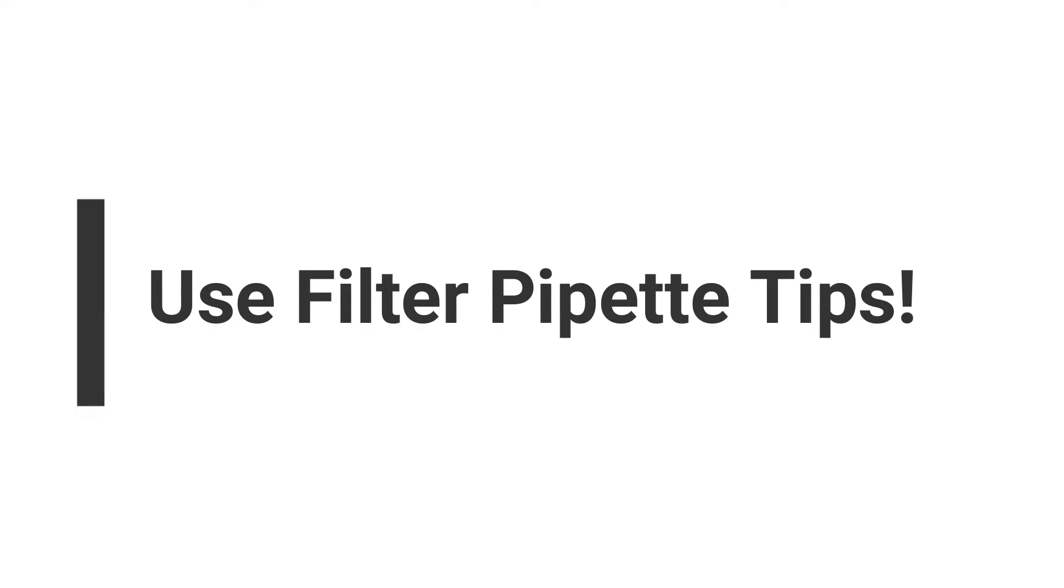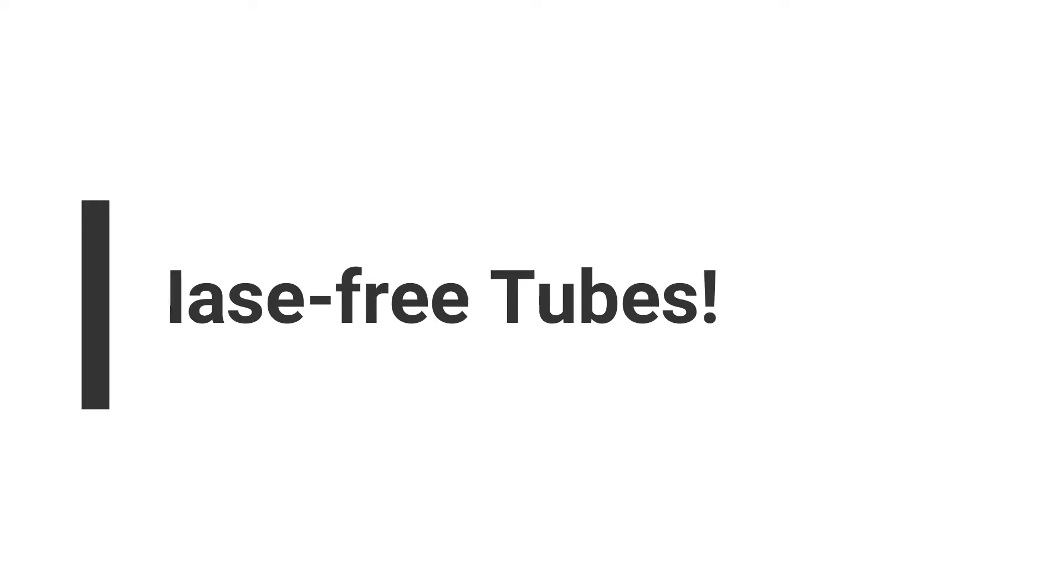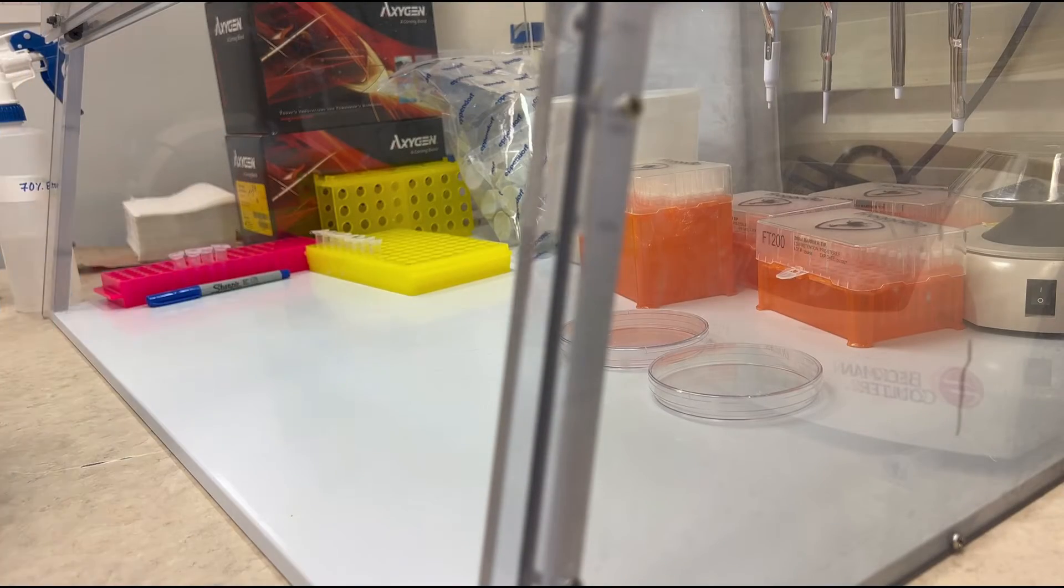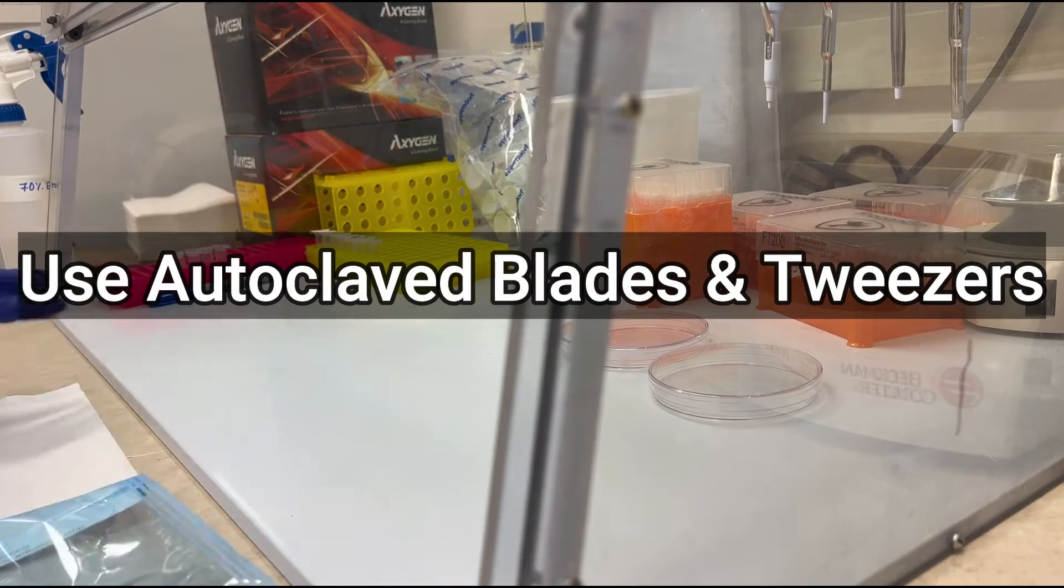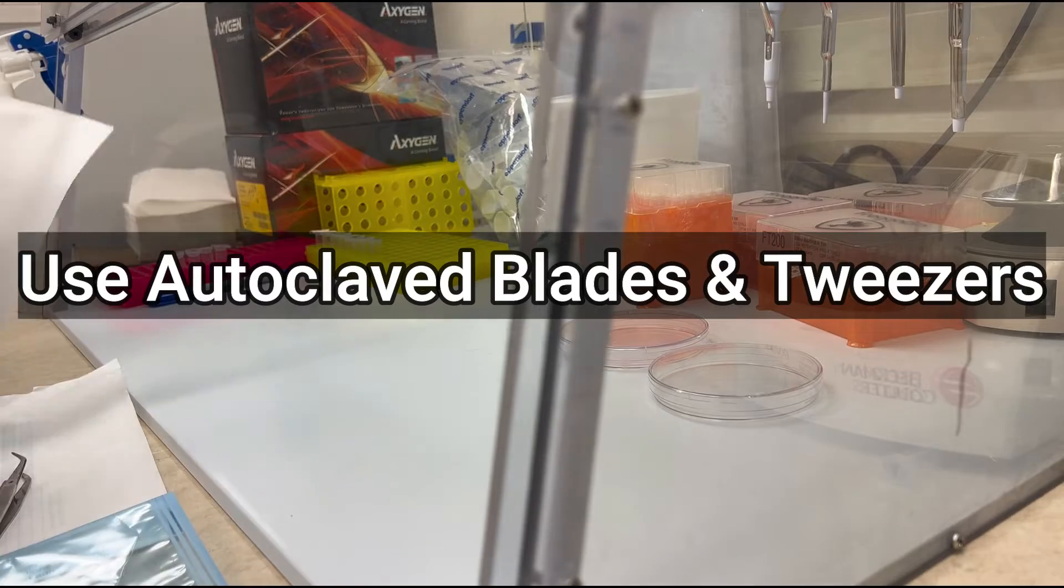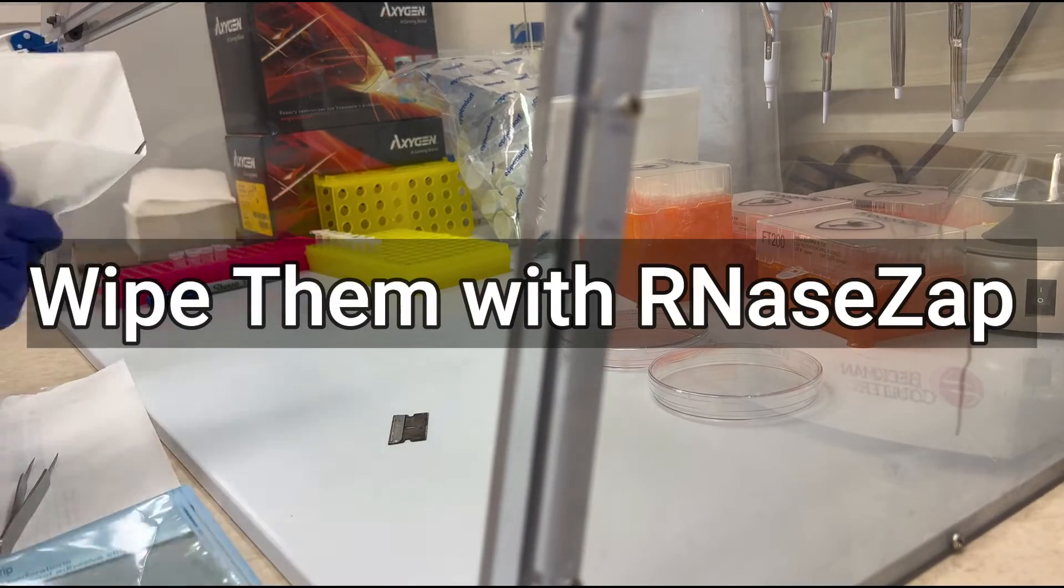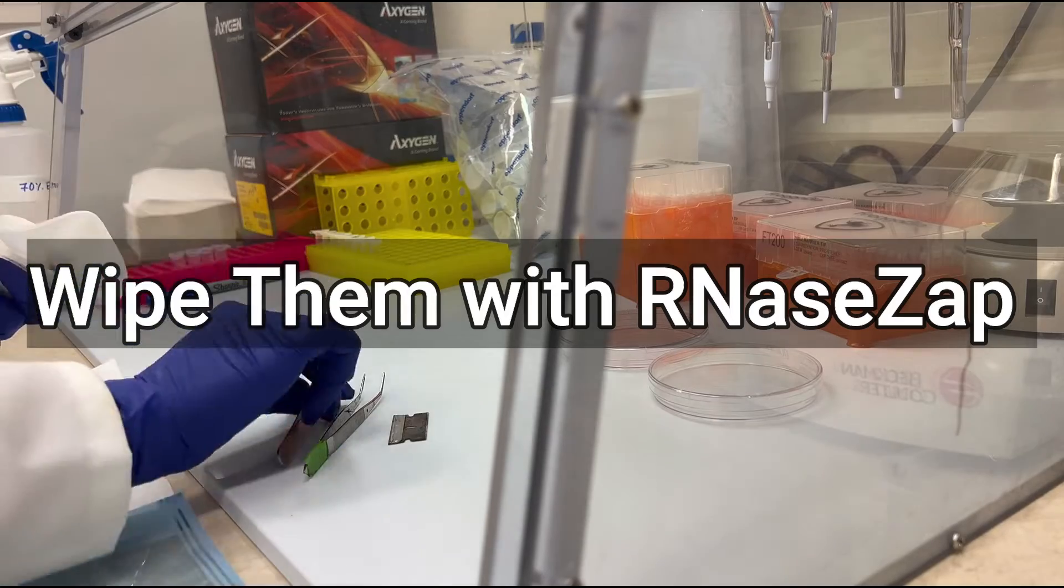Next up, use filter pipette tips. It may seem small, but they play a big role in preventing contamination. Use RNase-free tubes; these special tubes are essential to keep your RNA samples intact. To ensure the integrity of your samples, use autoclaved blades and tweezers, but wait—there's one more step: wipe them down with RNA zap before you start.